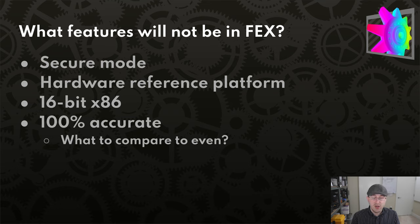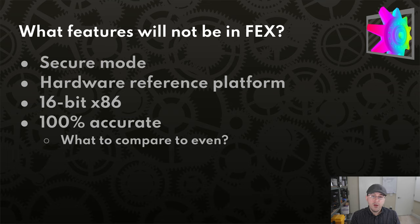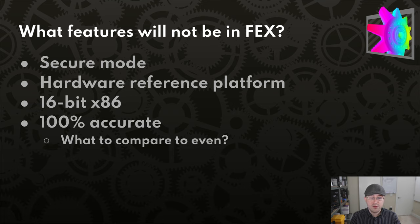Another huge problem we avoid is 100% accuracy to a single piece of hardware. There's enough wiggle room in the x86 spec that being accurate to any specific hardware doesn't actually matter. This includes undefined behavior of flags on instructions, undefined edge cases that differ between AMD and Intel hardware, and floating point accuracy requirements. So long as we get close enough to the spec without sacrificing performance, that's what we're going for — and that's not to say we're forgoing accuracy altogether. We have many unit tests to ensure our CPU emulation is close enough to the x86 spec.